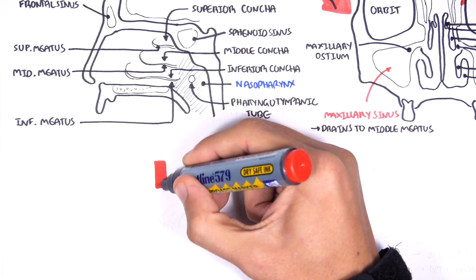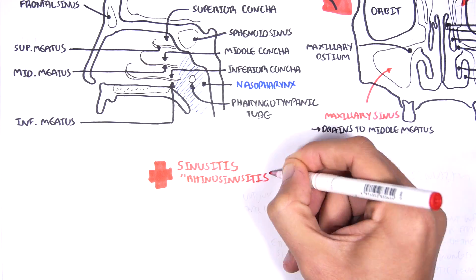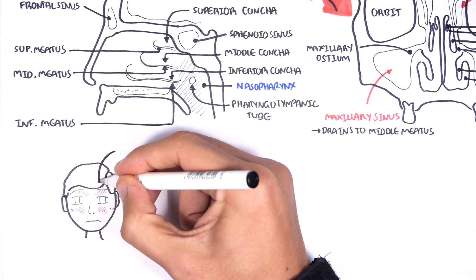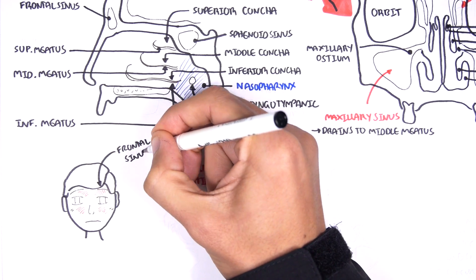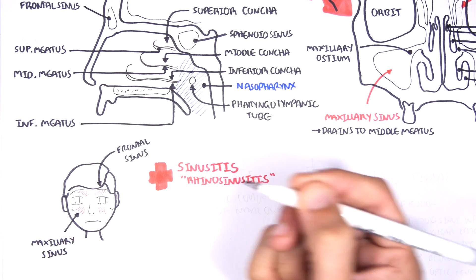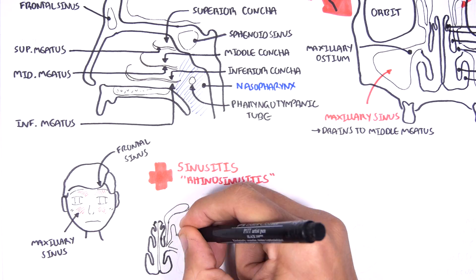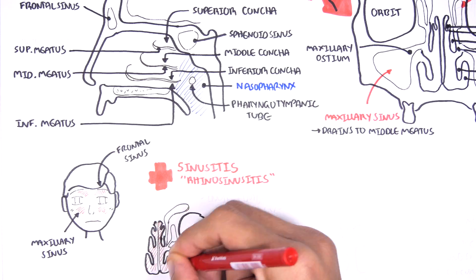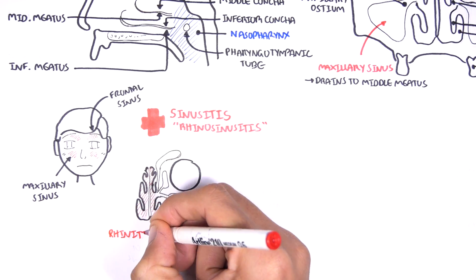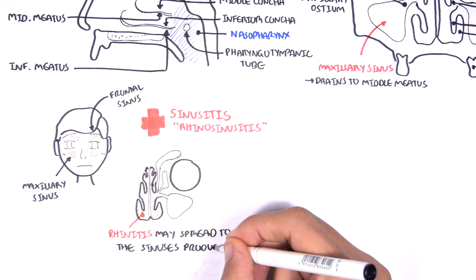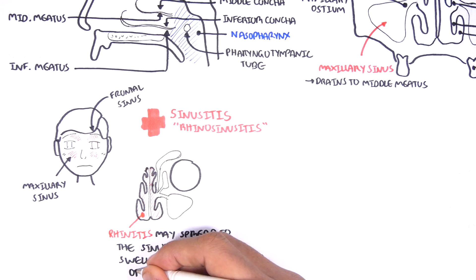Sinusitis, or should we call rhinosinusitis, is inflammation of the sinuses. A feature of someone with sinusitis is essentially redness or erythema around where the sinuses lie. And so the frontal and maxillary sinus may appear red and irritated. The pathophysiology of sinusitis, as we have learned, can be secondary to rhinitis. Rhinitis may spread to the sinuses, producing swelling and inflammation of the sinus mucosa.